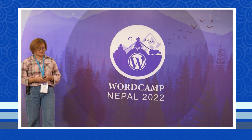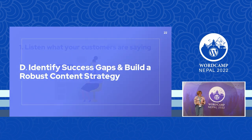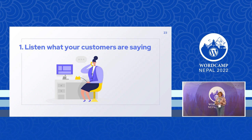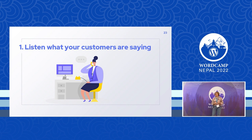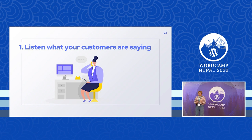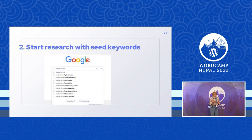Now, how to identify success gaps and build a robust content strategy. First, listen to what your customers are saying or asking. You may have different support channels like email support, live chat, forums, or social media. On these channels, customers may be asking questions or sharing problems — where they are stuck, what problems they have. Take note of them, do further research, categorize them, prioritize them, and then start working on them. Also, run online surveys and ask your customers what problems they are facing and how you can help.